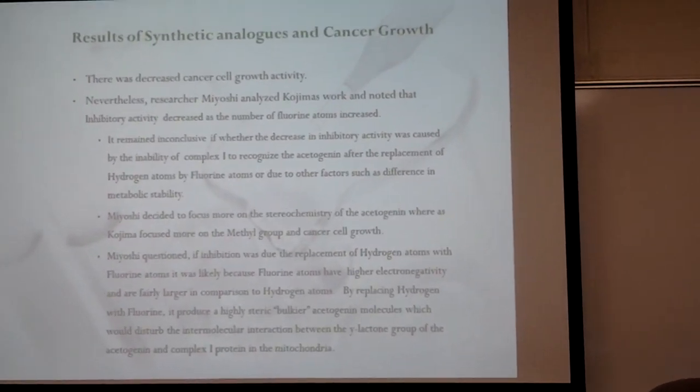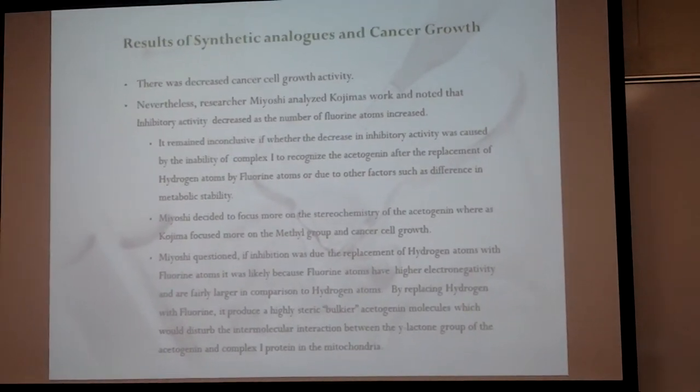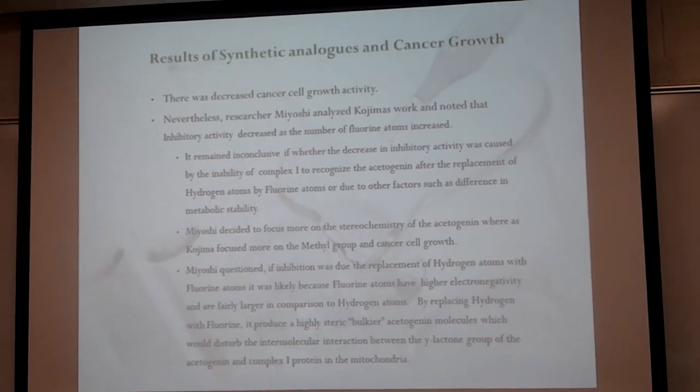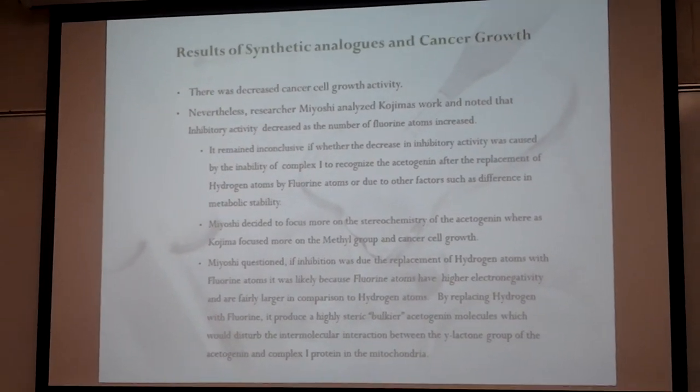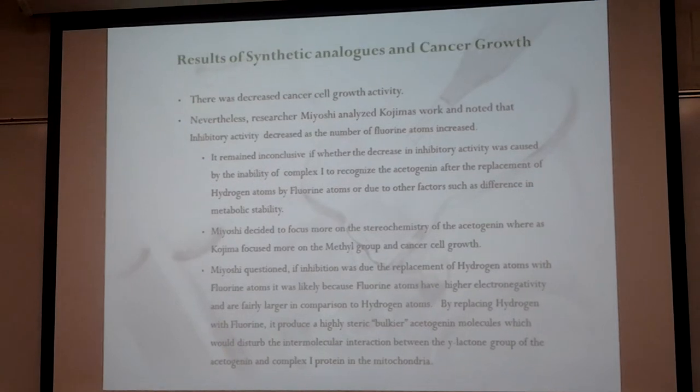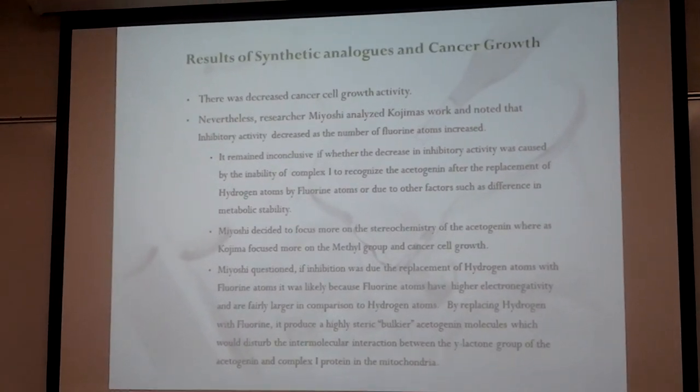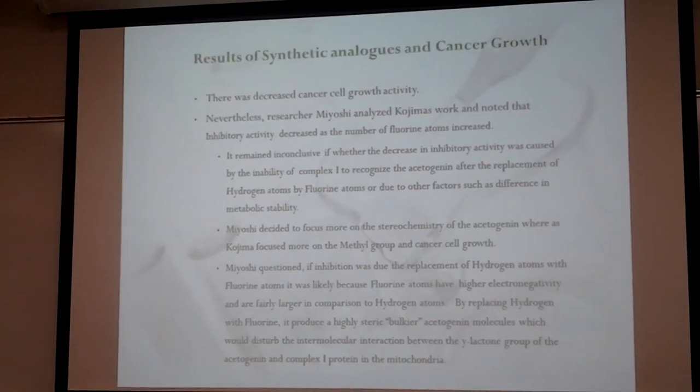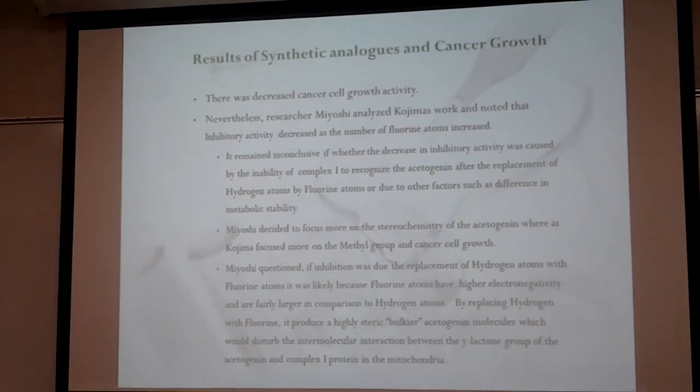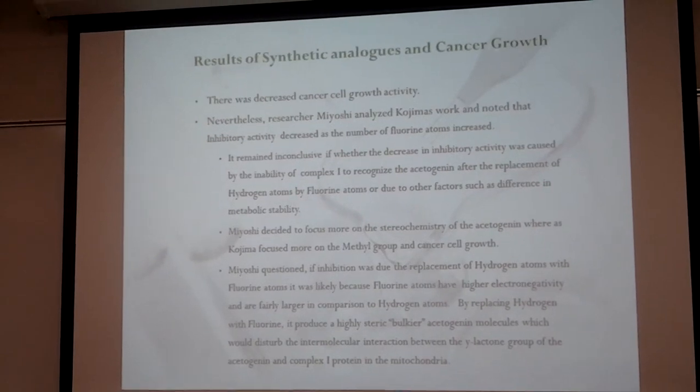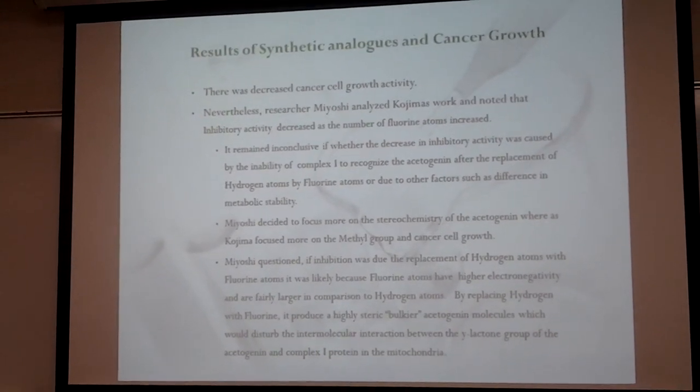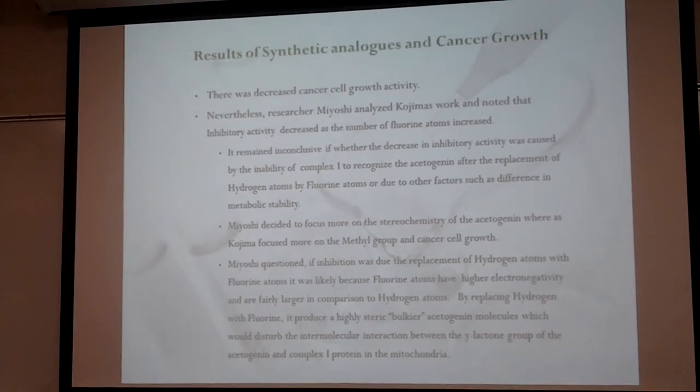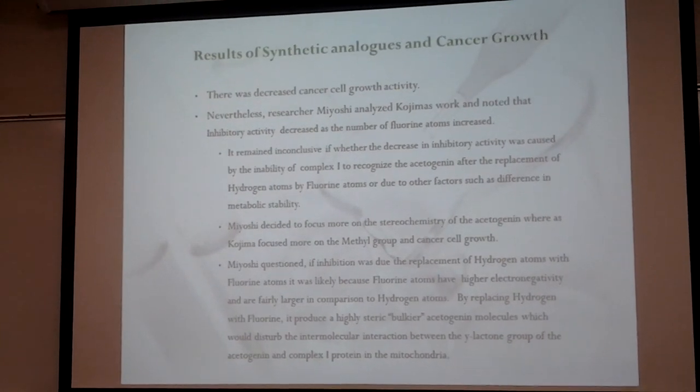Miyoshi decided to focus more on the stereochemistry of the acetogenin, where Kojima focused more on the cancer cell growth and the methyl groups. Miyoshi's hypothesis was that inhibition was reduced due to the replacement of hydrogen with fluorine because fluorine has a higher electronegativity and is a larger atom than hydrogen. This would create bulkier stereochemistry on the acetogenin molecule.